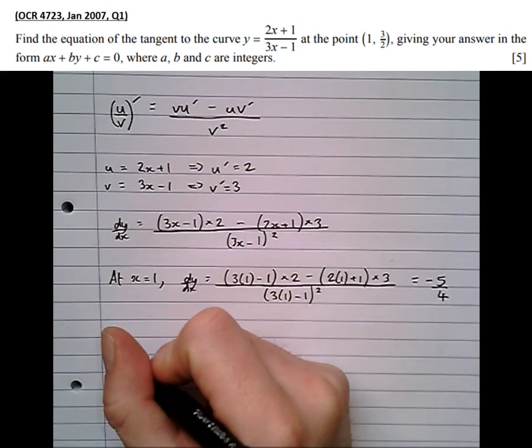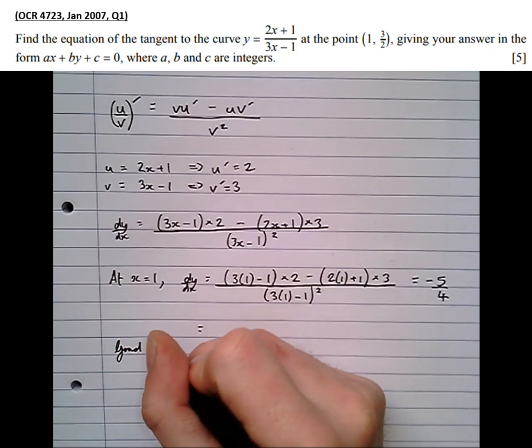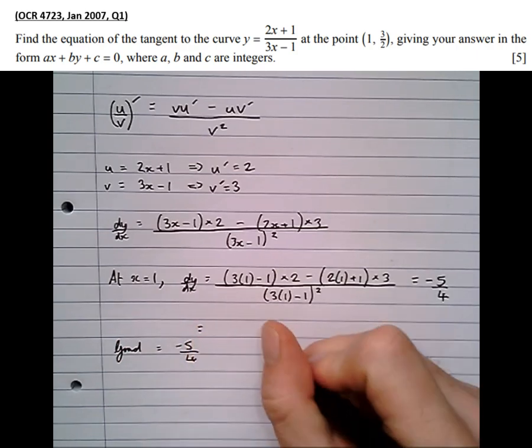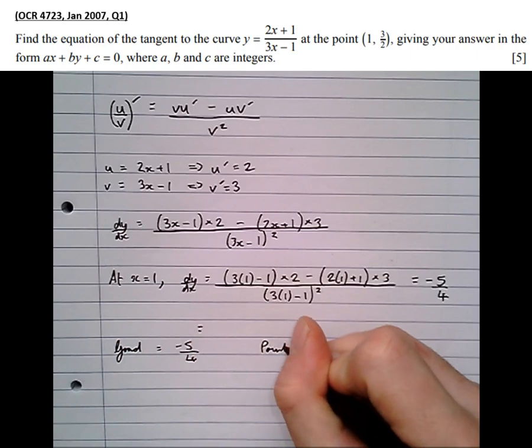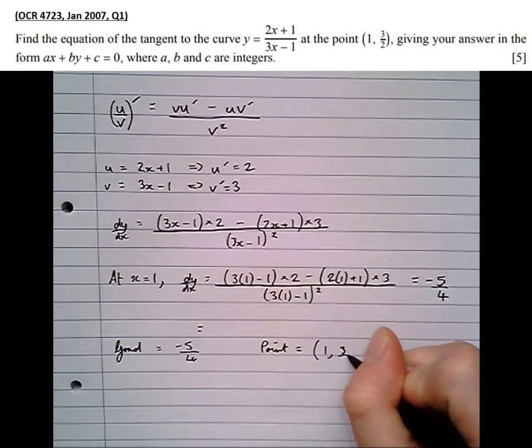So now, I've got the gradient at the point equals minus 5 quarters. And I've got a point, which is equal to (1, 3/2).